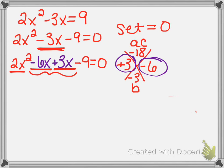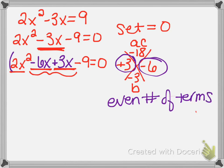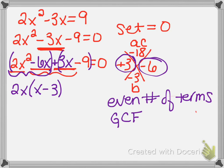Now I can factor by grouping. Grouping says you have to have an even number of terms, which we do now — instead of three terms we have four. We group the first two and group the last two. The factoring part is just pulling out your GCF three times. The GCF of the first group is 2x, and it leaves behind an x minus 3. The GCF from the second group is a positive 3, and it also leaves behind an x minus 3.